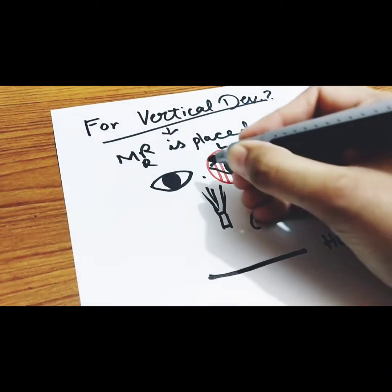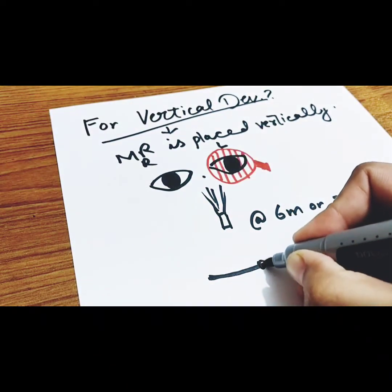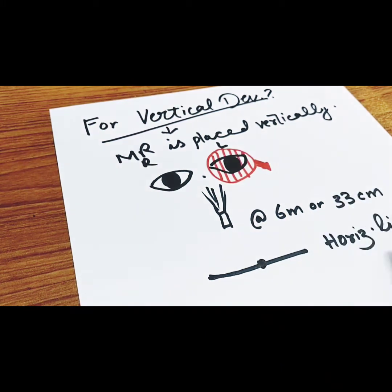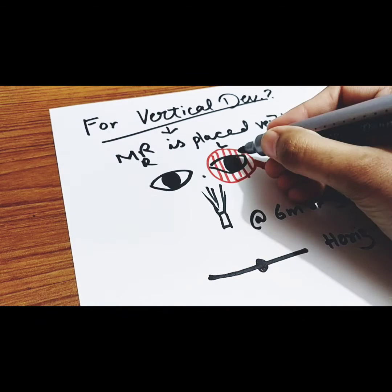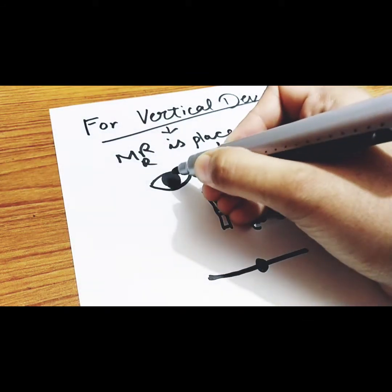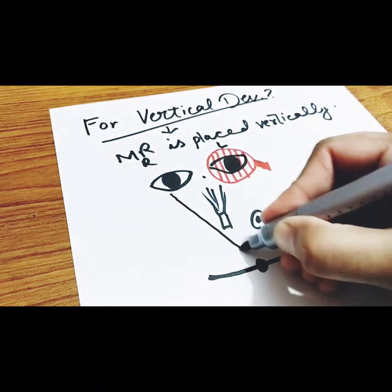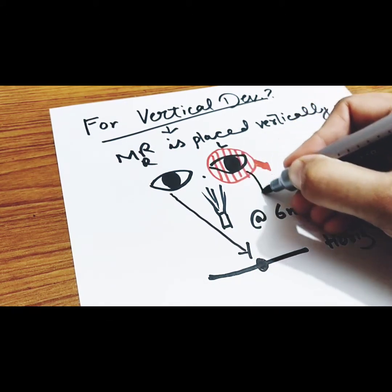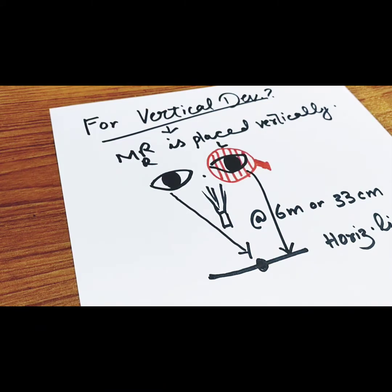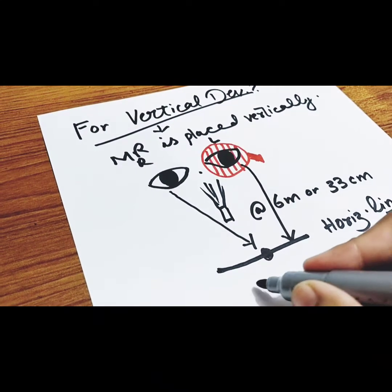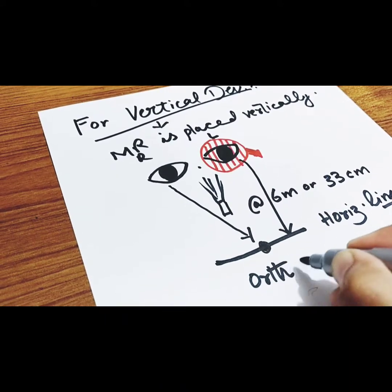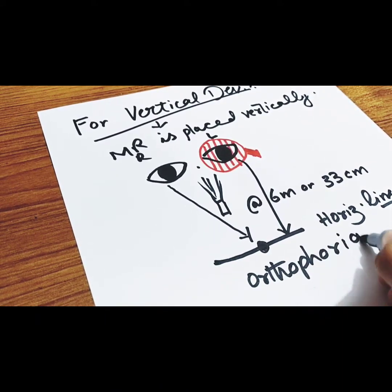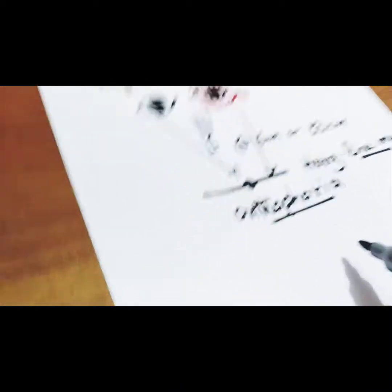From the right eye, the patient sees a light reflex. When the light reflex is superimposed on the horizontal line image — from the left eye the patient sees the horizontal line image and from the right eye the light image — both are superimposed, so this is an orthophoric condition. Orthophoria means no latent deviation.